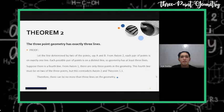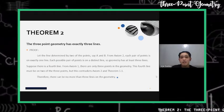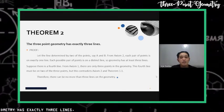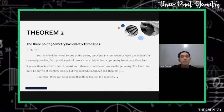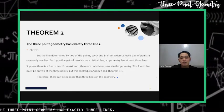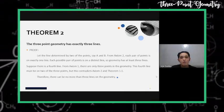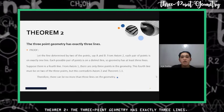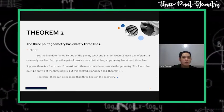Let the line determined by two of the points, say A and B, be denoted by X. The third point C is not on X by axiom three. A and C determine a different line from X, as well as B and C. These two lines cannot be equal since that would imply the three points are on the same line. Suppose there is a fourth line; by axiom one there are only three points, and this fourth line must be on two of the three points, but this contradicts axiom two and theorem one.